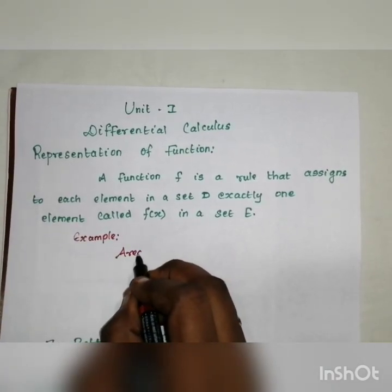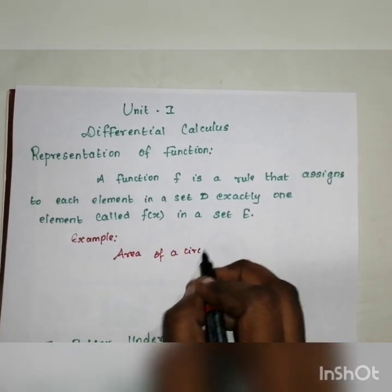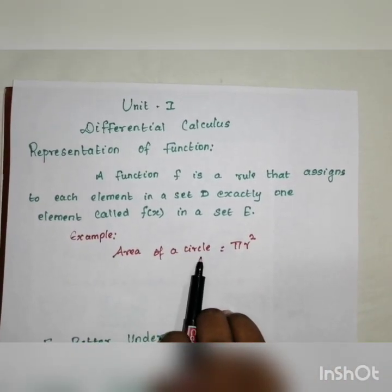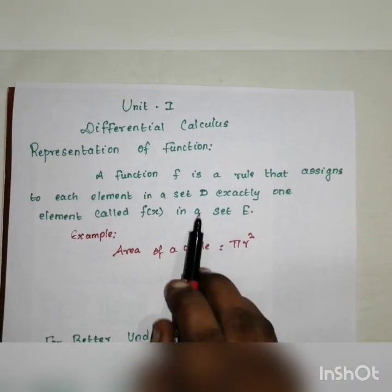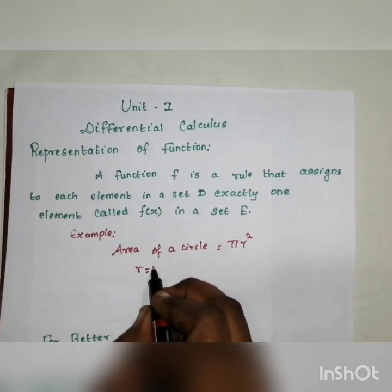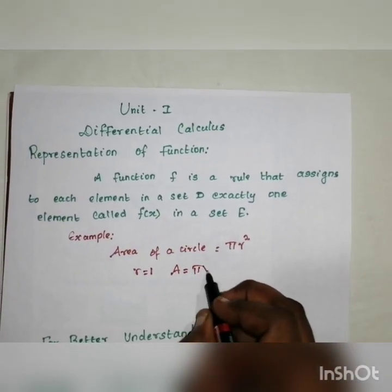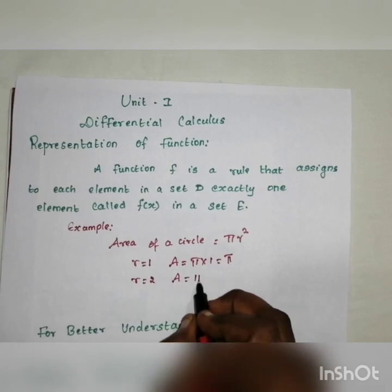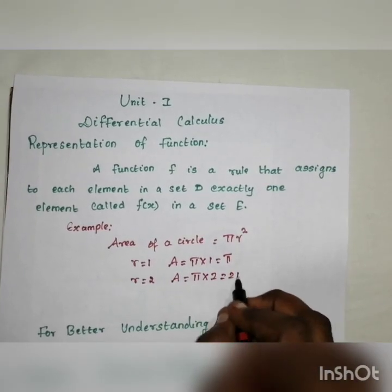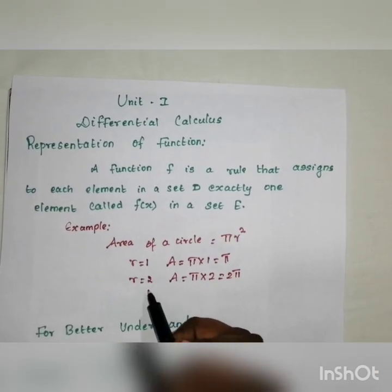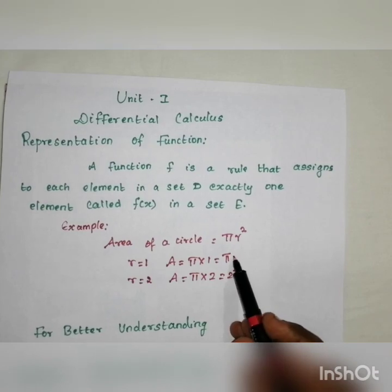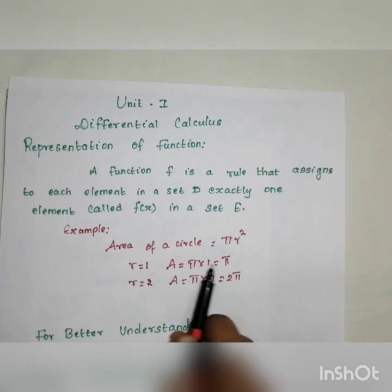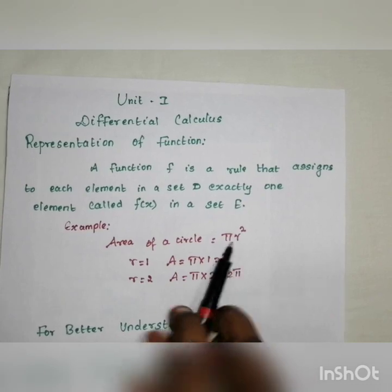For example, consider the area of a circle. The formula is A = πr². In this example, we have area as the function. If r = 2, then the area equals 2π. The variable is r, and the output values belong to set E.